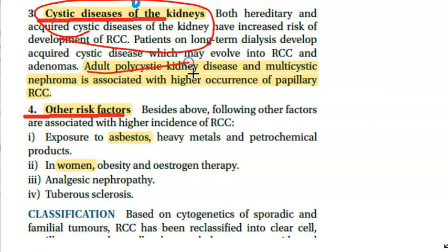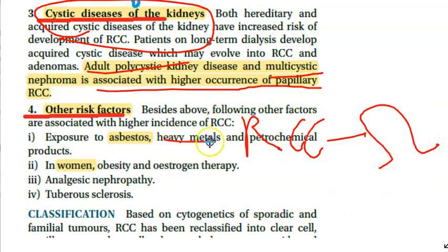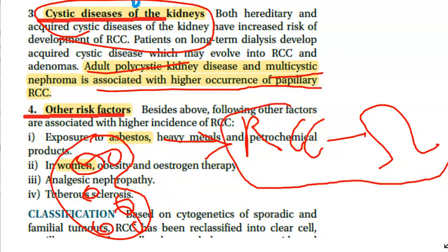Cystic diseases of the kidney like adult polycystic kidney disease and multicystic nephroma are associated with higher occurrence of papillary renal cell carcinoma. Adult polycystic kidney disease and multicystic nephroma are specifically associated with the papillary type.